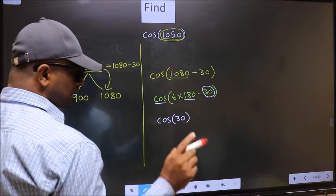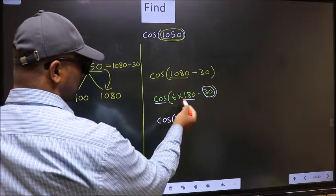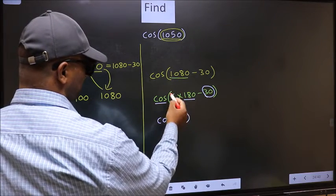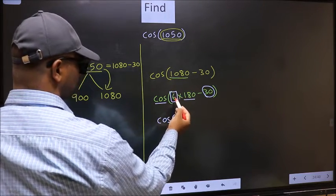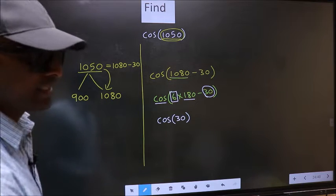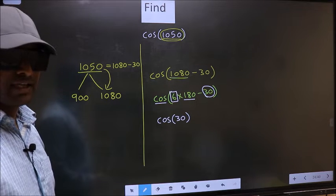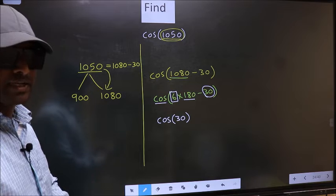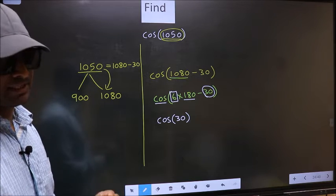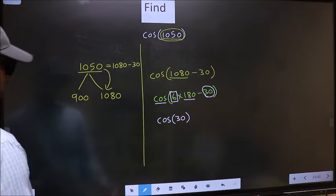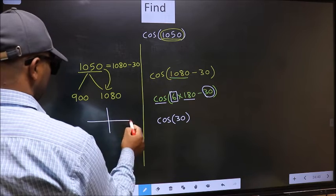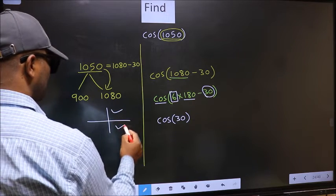To answer that, we should look at the number before 180°. That is 6. And 6 is even. And all the even multiples of 180° lie in either the first or the fourth quadrant.